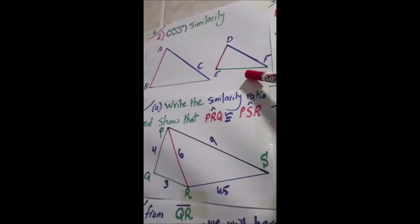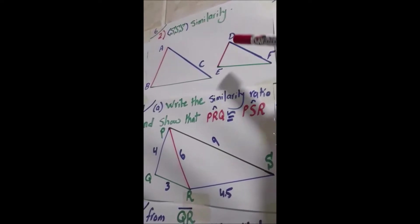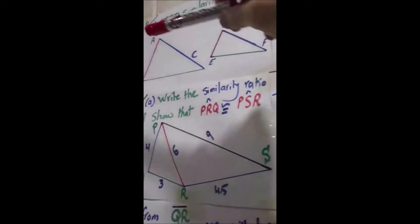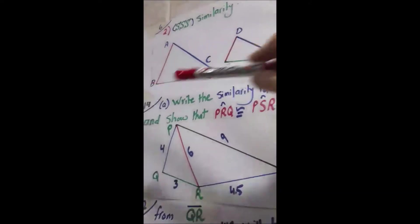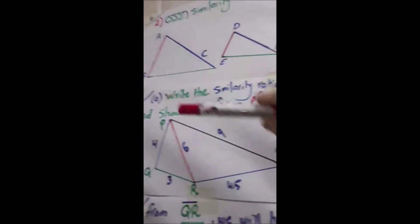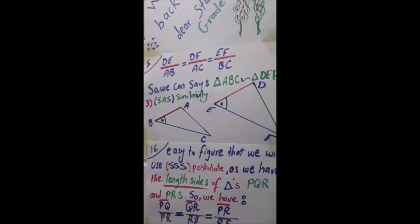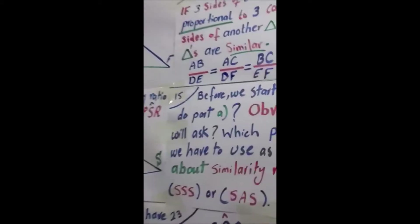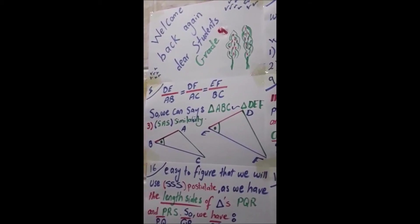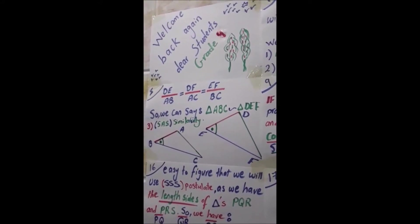Or if you want to start with the small triangle, continue with the small one: DE/AB = DF/AC = EF/BC. So either you go left to right or right to left. In one case you might get a similarity ratio of 2/3, and in the other you get 3/2 — no problem. So these two triangles ABC and DEF are similar.